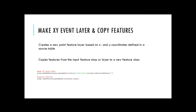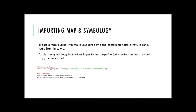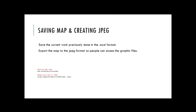After removing the land, I put the file inside ArcGIS and used two different tools. The first is the 'Make XY Event Layer' tool, which creates a new point feature layer based on X and Y coordinates. The second is the 'Copy Features' tool, which copies features from the layer to a new feature class, giving me the shapefile. After that, I imported a map and symbology from another map to save time — so I didn't have to manually set map layouts such as legend and title. Finally, I saved the map and exported it as a JPEG so people can access the graphic files on the GLIDER website.